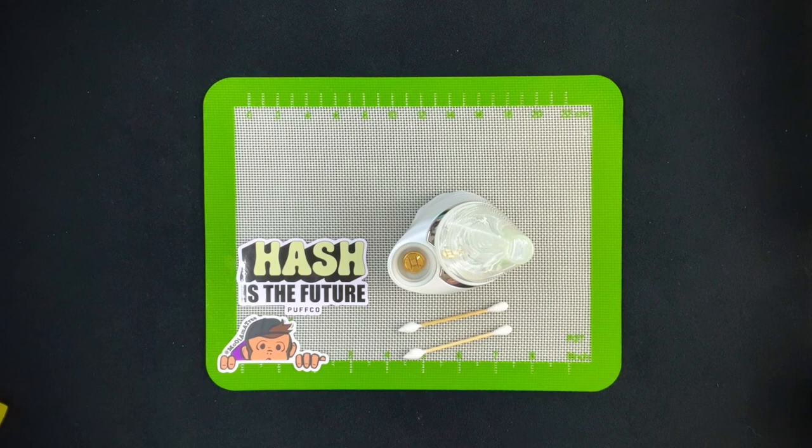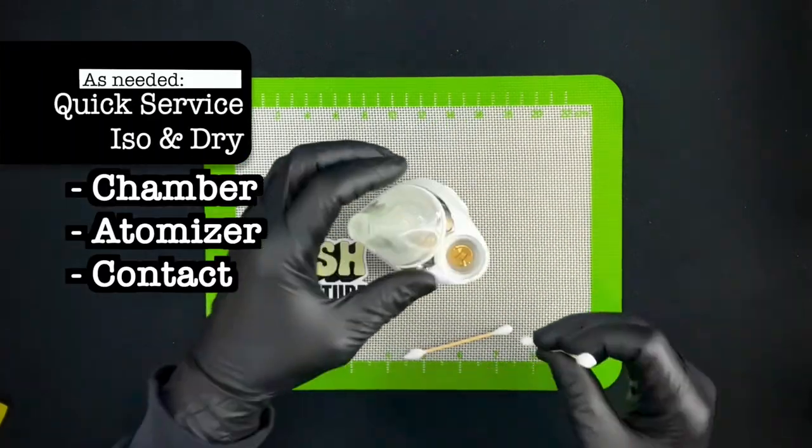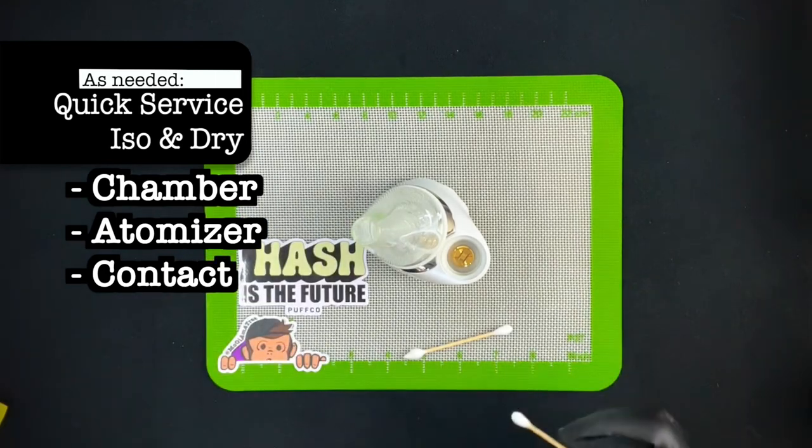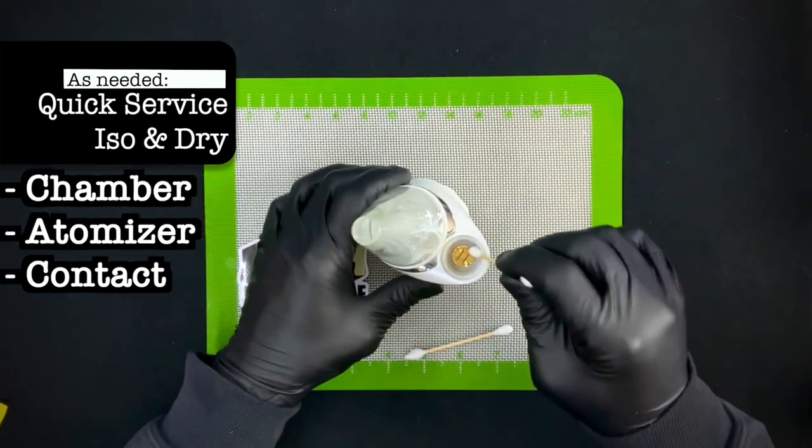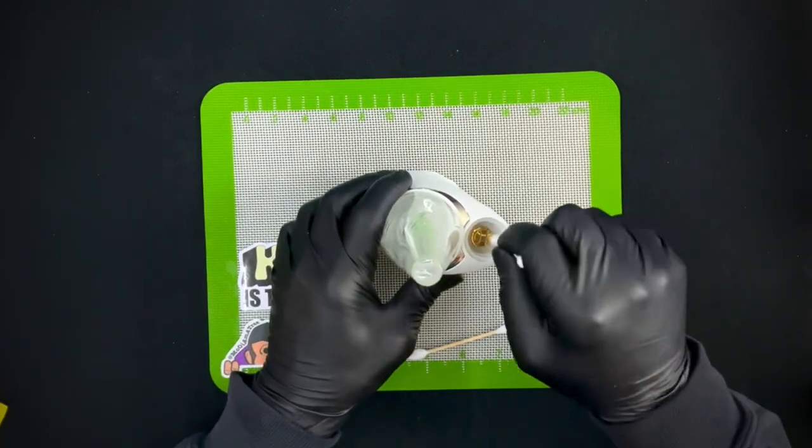So now that we've covered how to clean the chamber, when the chamber is out and soaking I'll take a q-tip with some iso or a terp wipe, whatever you have on hand, and I'll go to town in this little area and I'll iso out everything in here and I'll really make sure to get down deep in there.